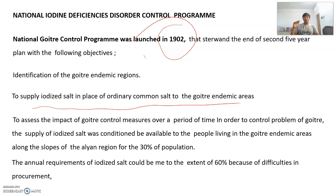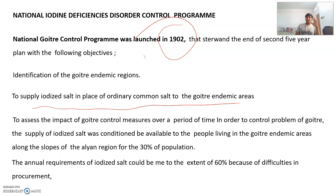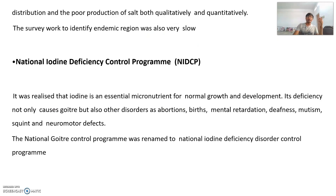Iodized salt was intended to be available to all people living in endemic areas. However, annual requirements for iodized salt could only be met to an extent of 60%, due to difficulties in procurement and distribution, poor production of salt both qualitatively and quantitatively, and very slow progress in surveys to identify endemic areas.